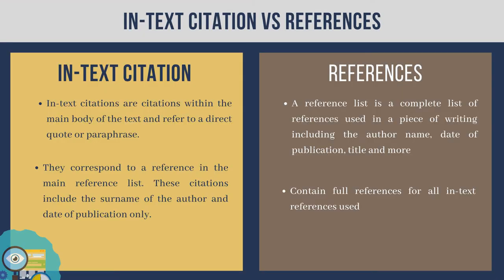You might be wondering what is the difference between in-text citations and references. On one hand, in-text citations are citations within the main body of the text and refer to a direct quote or paraphrase. They correspond to a reference in the main reference list and include the surname of the author and the date of publication only. On the other hand, a reference list is a complete list of references used in a piece of writing. This includes the author name, date of publication, title, and more. These contain full references for all in-text citations used.